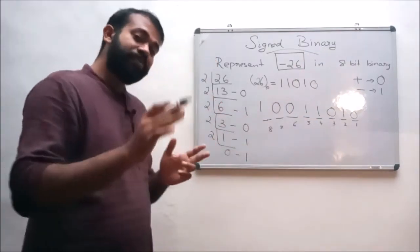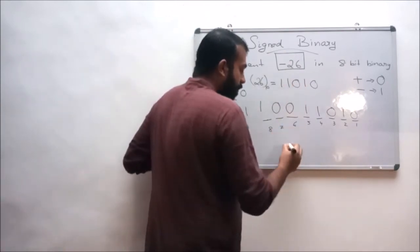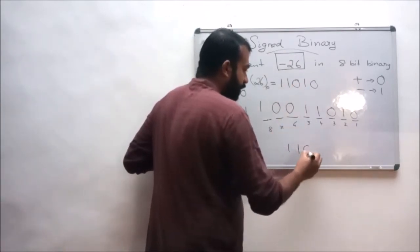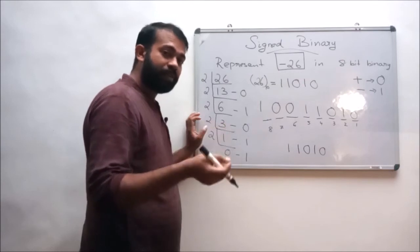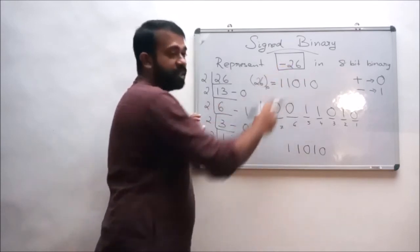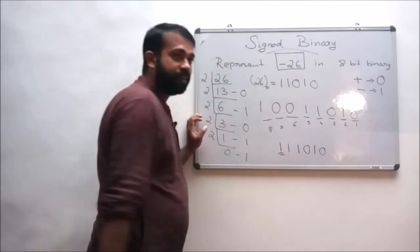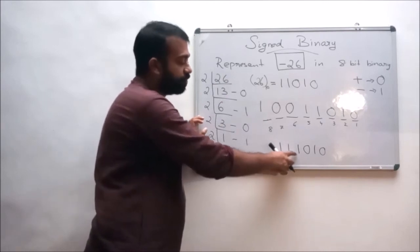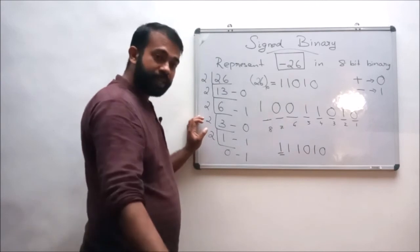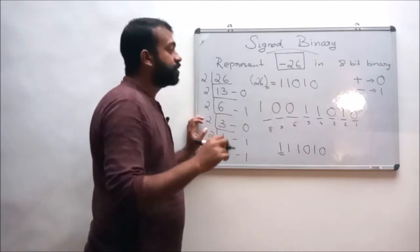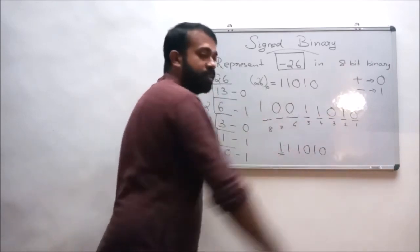So the final result of minus 26 in 8-bit representation is 1 0 0 1 1 0 1 0. If the question simply asks to represent minus 26 in binary without specifying 8 bits, then the answer is 1 1 0 1 0, where the leading 1 is the sign bit for minus, giving 1 1 0 1 0.